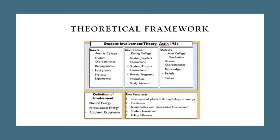For our study, we used Astin's 1984 student involvement theory as our primary theoretical framework, as well as influences from Chickering's developmental theory and Tinto's integration model. Astin separates a student's development into three primary categories: their inputs, their environment, and their outputs. A student's inputs consist of their characteristics, background, and any previous experience they may have prior to college.